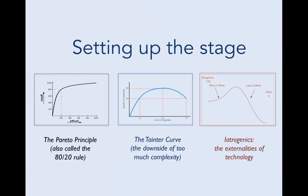To set up the stage and talk about approximate networking, I need to introduce three concepts. The first is the Pareto principle, also known as the 80-20 rule. The second is the Tainter curve, which highlights the downside of too much complexity. And finally, a concept from health sciences known as iatrogenics, in which we talk of the externalities of technology — whenever we have an intervention, it also has certain side effects.